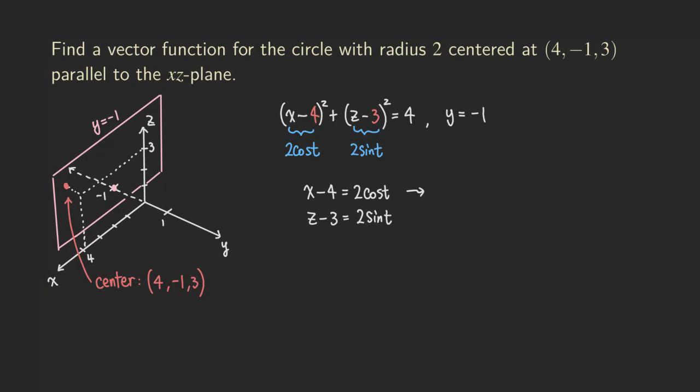And so now solving for both x and z, we are going to get x to be 4 + 2 cos t. And then solving for z, we are going to get 3 + 2 sin t. Okay, and then of course, you also need to include the y as the parametric equation. And so right now, we are ready to write down the vector function.